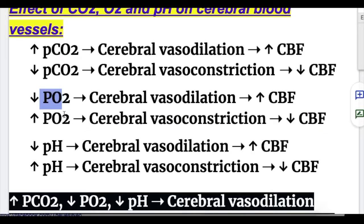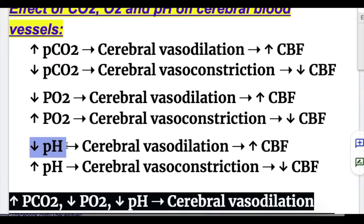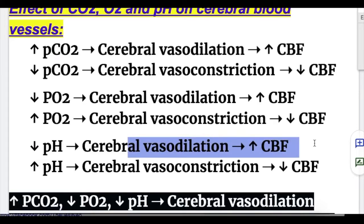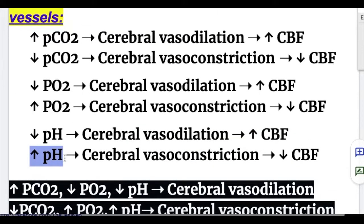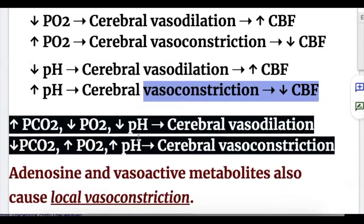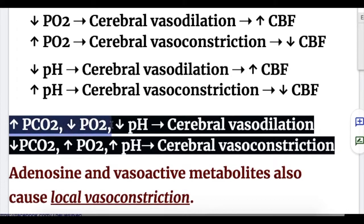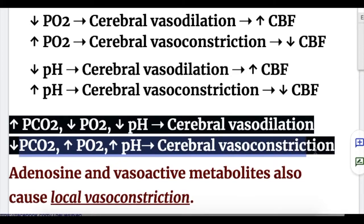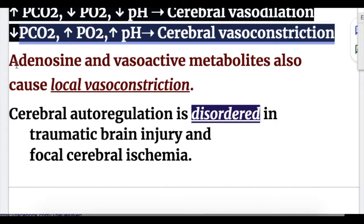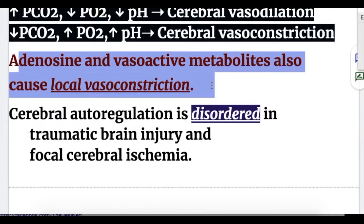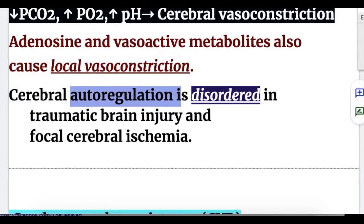So the effects of oxygen are opposite to those of carbon dioxide. Decreased pH or increased acidity causes cerebral vasodilation, increasing cerebral blood flow; increased pH causes cerebral vasoconstriction and decreases cerebral blood flow. In summary: increased CO2, decreased O2, and decreased pH lead to cerebral vasodilation, while decreased CO2, increased O2, and increased pH lead to cerebral vasoconstriction. Other substances such as adenosine and vasoactive metabolites cause local vasoconstriction. Cerebral autoregulation is disordered in traumatic brain injury and focal cerebral ischemia.